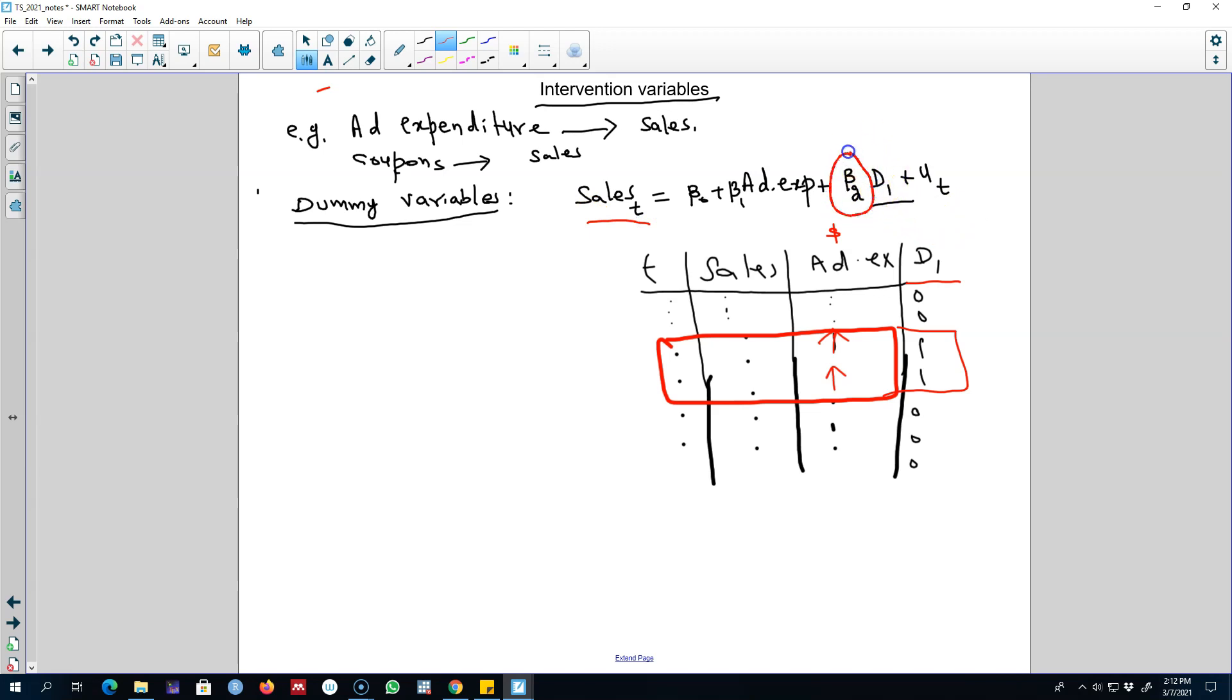The value of beta 2 that we will get will show us the effect of that particular intervention on the sales value as compared with the omitted category, that is without the intervention.